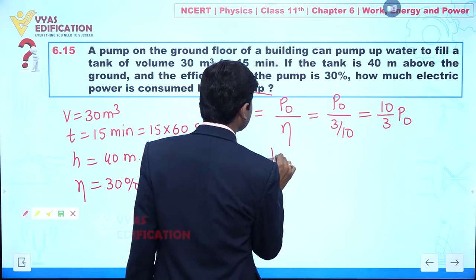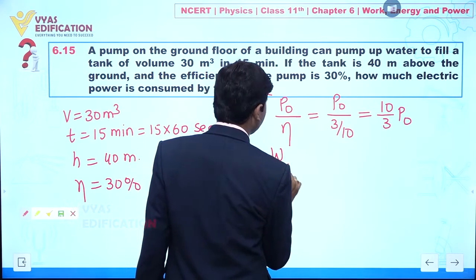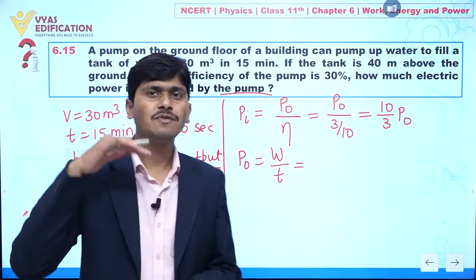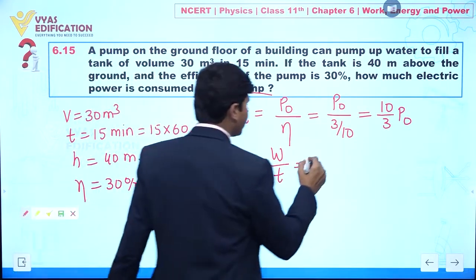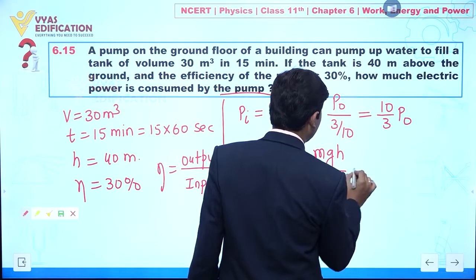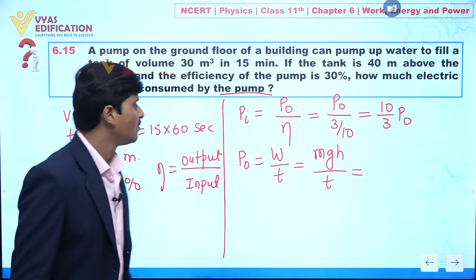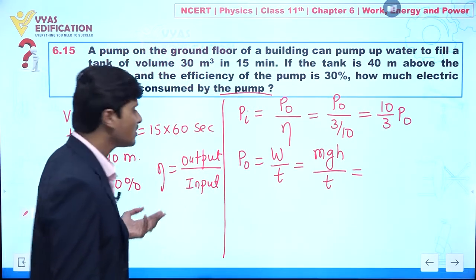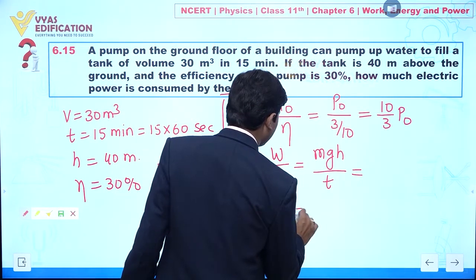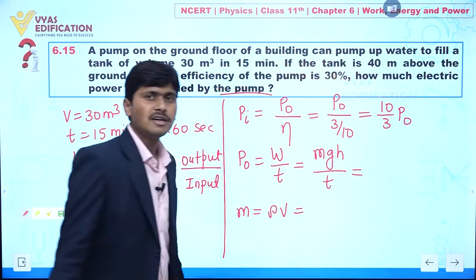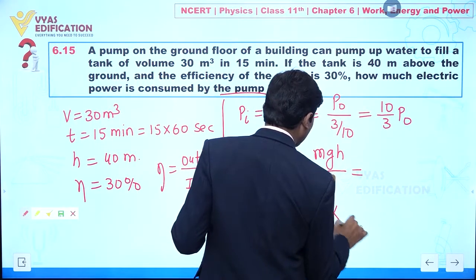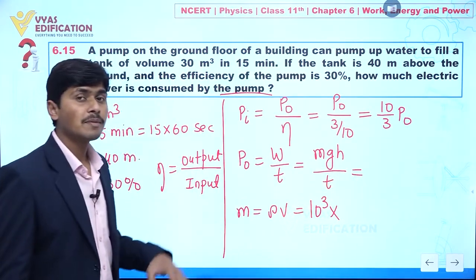Output power can be expressed as W divided by t, which equals mgh divided by t, since the tank is situated at a height of 40 meter from the ground. To find mass, we use mass = density × volume. The density of water is 10³ kg/m³.